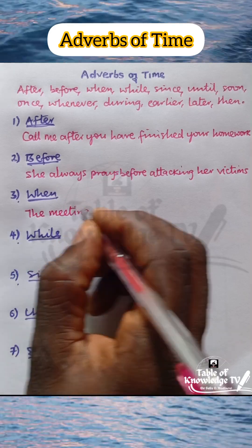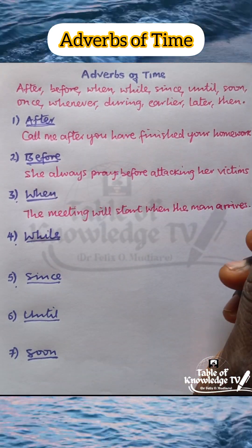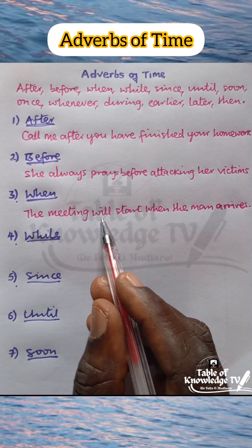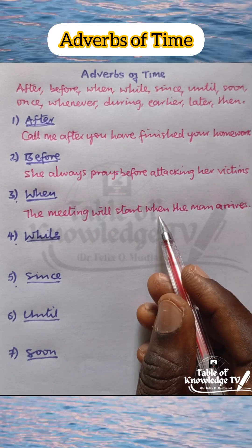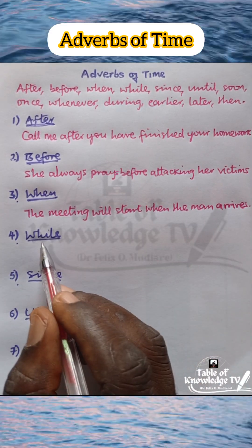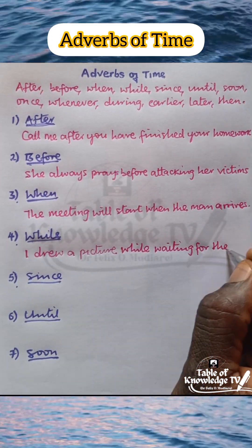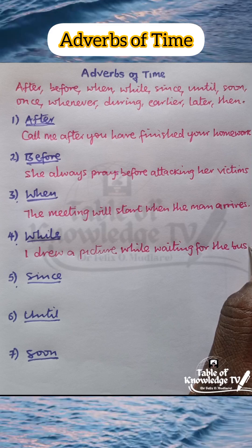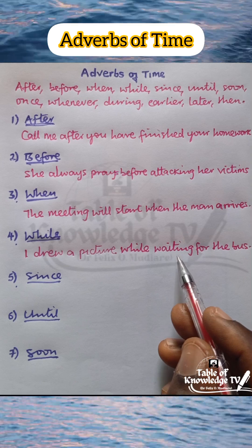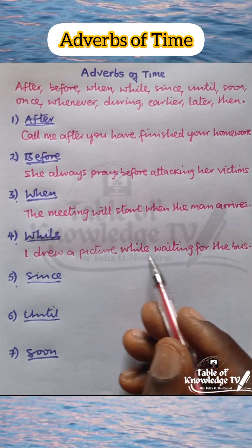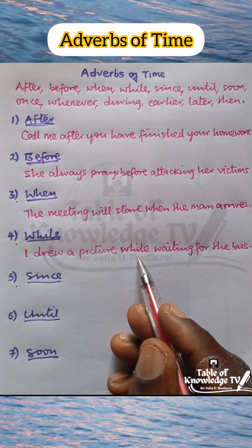Number three: when. The meeting will start when the man arrives. At what time will the meeting start? When the man arrives. 'When' is an adverb of time. While — I drew a picture while waiting for the bus, at the same time as waiting for the bus. 'While' is an adverb of time.